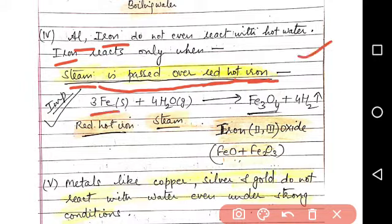The reaction is 3Fe + 4H2O gives Fe3O4 + 4H2. This Fe3O4 is named as iron 2-3 oxide and it is a mixture of FeO + Fe2O3.